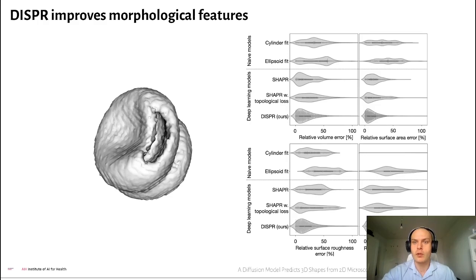When trained on a red blood cell data set, we find that DISPR outperforms other methods, such as autoencoders, when it comes to relevant metrics such as relative surface error and surface roughness.